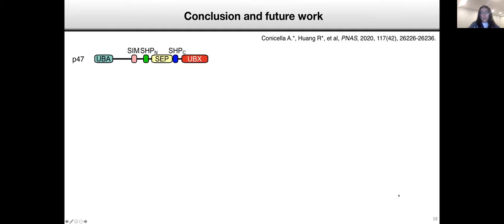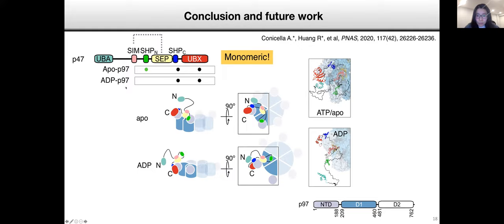To summarize our findings, we have characterized the oligomerization state of P47 and found that it's monomeric. We identified an intramolecular interaction between the linker and the SEP domain. We identified a new binding motif in P47, the SHIP-N motif. And this motif interacts with P97 in a nucleotide-dependent manner. Future work is still needed to figure out what structurally leads to these two different binding modes and what is the physiological role of switching between the two binding modes.